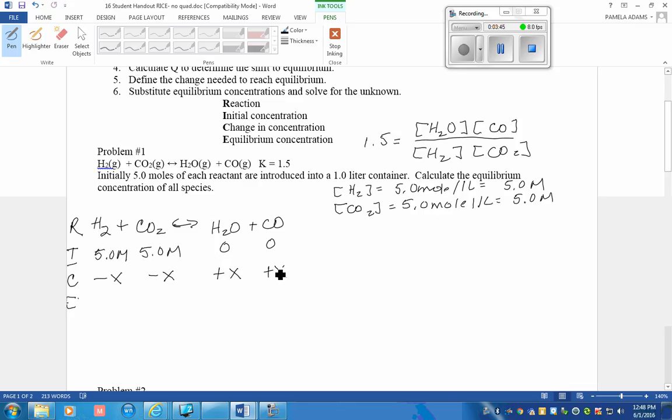Now we're going to write an equilibrium equation. We know that we started out with 5 molar and some of it will be used up. When we find out how much is used up, we can find the equilibrium concentration. Likewise, we started with 5 molar, we're going to use some of it up. And when we take 5 minus some of what is used up, it will give us the equilibrium concentration. Our values for H2O and CO are X. That will be the amount formed when these two reacted.